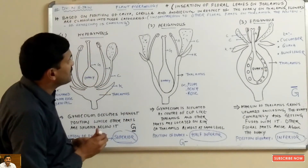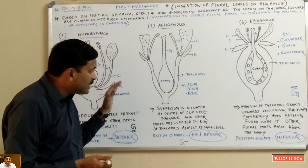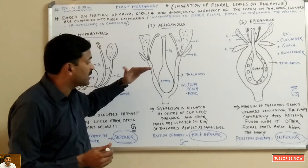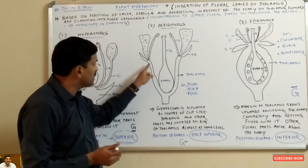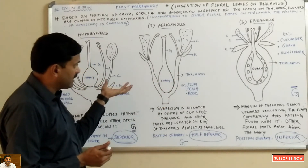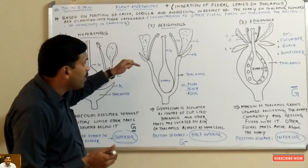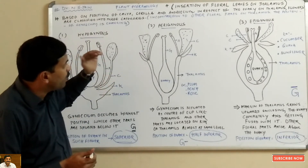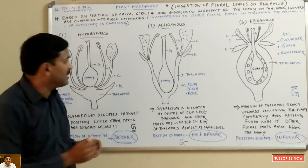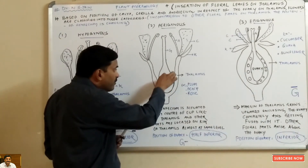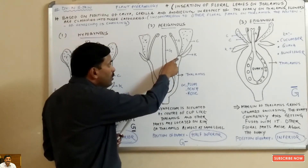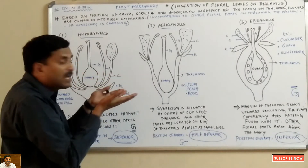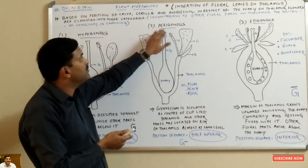Coming to the second type, the perigynous flower. Here, the gynoecium is situated at the center of a cup-like thalamus. The peculiar feature of this flower is that the thalamus becomes cup-shaped, with the gynoecium at the center. All the other floral parts — calyx, corolla, and androecium — are located on the rim of this cup-shaped thalamus at almost the same level. Such a flower is called a perigynous flower.